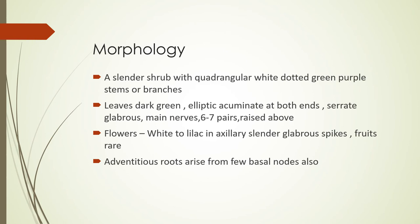Morphologically it is a slender shrub. The main distinguishing property is quadrangular, white-dotted, green-purple stems or branches — white dots are visible everywhere. Leaves are dark green, elliptic, acuminate at both ends, glabrous, with six to seven pairs of main nerves raised above. Flowers are white to lilac in axillary slender glabrous spikes. Fruiting is very rare for this plant.